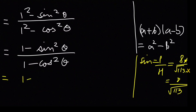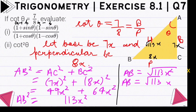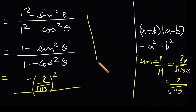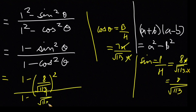So idhar, 1 minus sin²θ mein hum rakhte hain: 1 minus (8/√113)² whole square. Aur upon mein 1 minus cos²θ ke liye: cos theta = B by H = 7x upon root 113 x = 7 upon root 113. So denominator mein 1 minus (7/√113)².